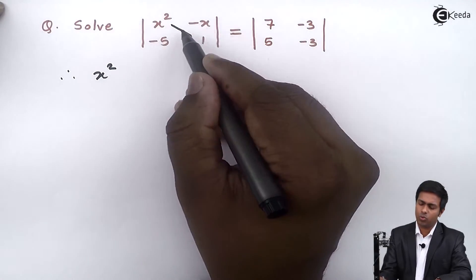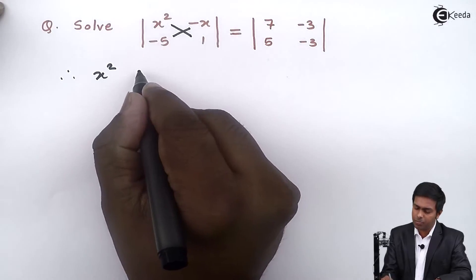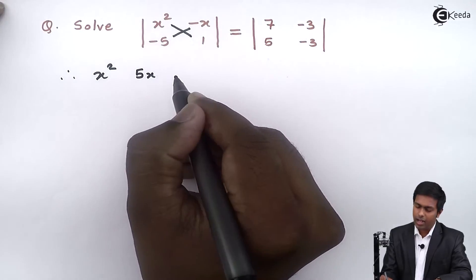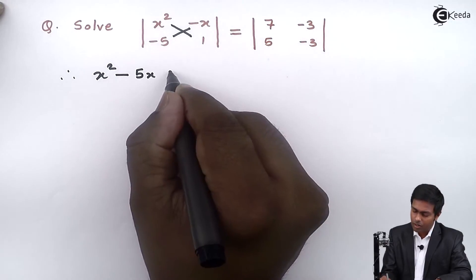Next we will multiply these 2 elements, so that will become minus 5 into minus x that is plus 5x. And as I said, we will subtract the value, so it will become minus equal to